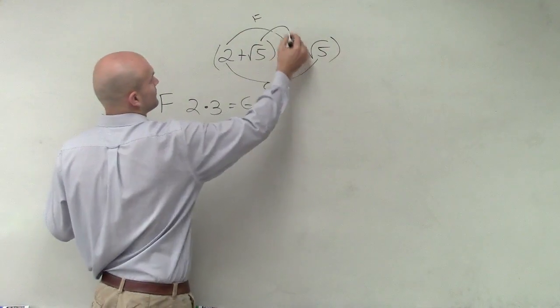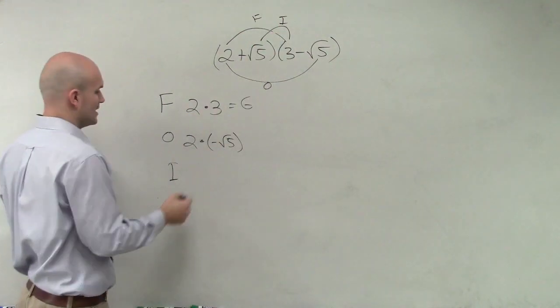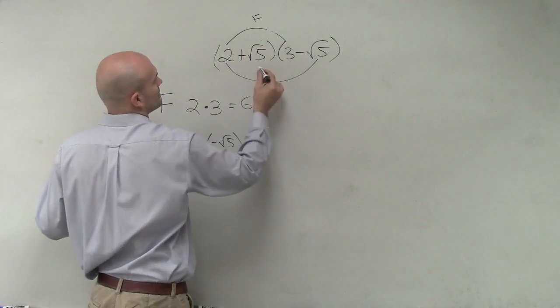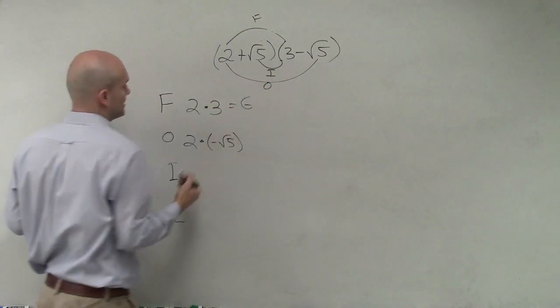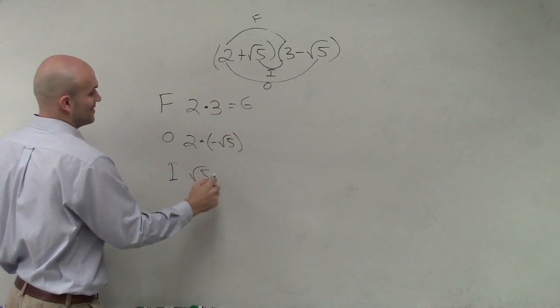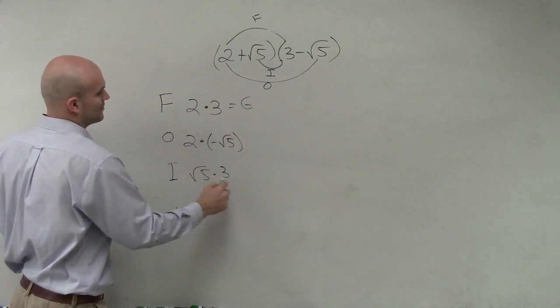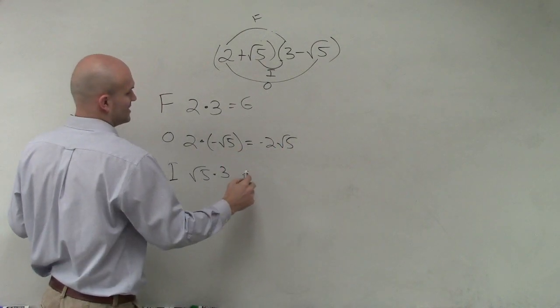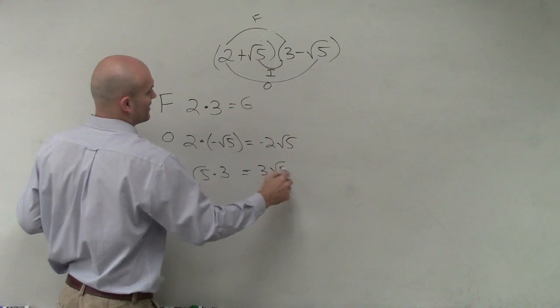Then we do the inner, which is going to be the square root of 5 times 3. So this ends up equaling negative 2 square root of 5. This ends up equaling 3 square root of 5.